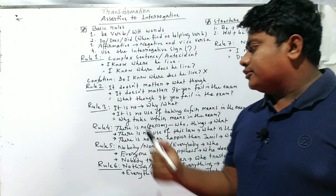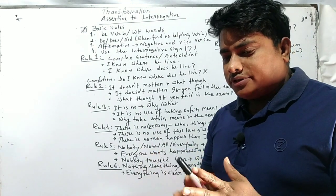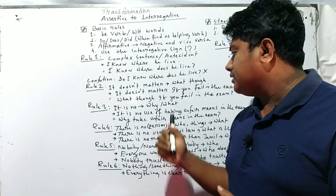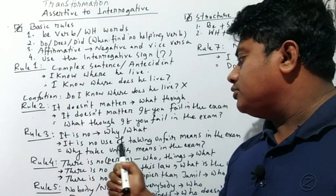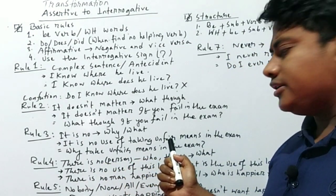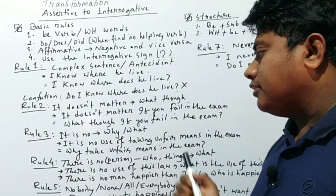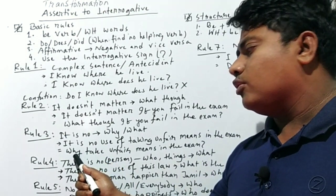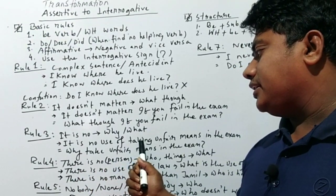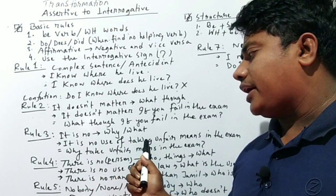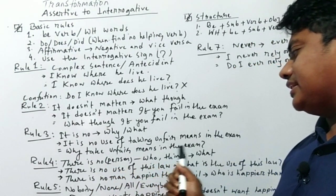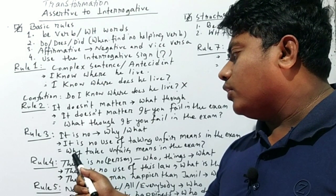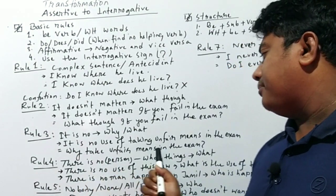Rule three: when an assertive sentence starts with 'It is no use,' we use the word 'why' to begin the interrogative. For example: 'It is no use taking unfair means in the exam.' We use 'why,' drop the '-ing,' and get: 'Why take unfair means in the exam?' Alternatively: 'Why do you take unfair means in the exam?' — both are correct.